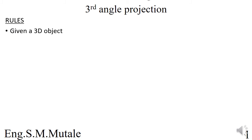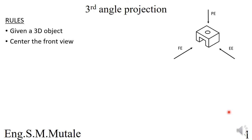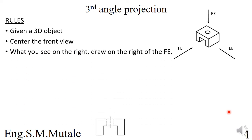Under third angle projection, you need to note the following rules. Given a 3D object, it has the front elevation, end elevation, and plan elevation. You first center the front view, and then the rules are: what you see on the right, you draw on the right. So for third angle, if this is your front view, your end view is to your right, so in third angle your end view should appear on the right.